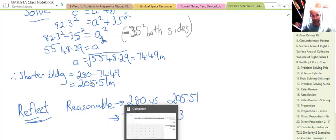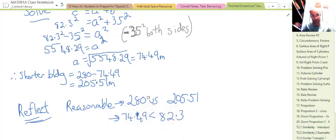Does the answer seem reasonable? Yes it does. It's reasonable because, let's look at the final answer: 280 versus 205.51. They are kind of similar but we see one building is clearly taller than the other, so that makes sense. Also the 74.49 up here has to be less than 82.3 because 82.3 is the hypotenuse and 74.49 is a shorter side. Go tackle some problems now.